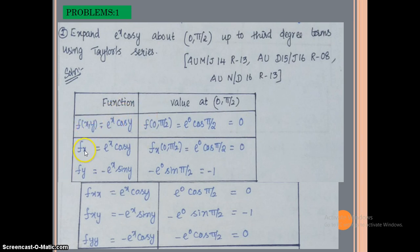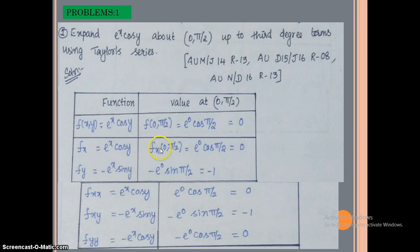Next, find the first-order partial derivatives. Differentiating with respect to x: fx = e^x·cos y, so fx(0, π/2) = e⁰·cos(π/2) = 0. Differentiating with respect to y: fy = −e^x·sin y, so fy(0, π/2) = −e⁰·sin(π/2) = −1·1 = −1.